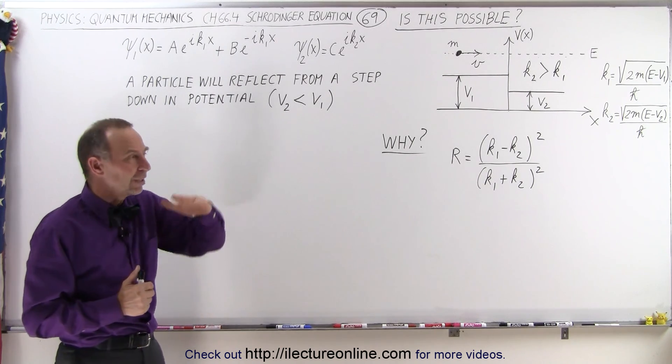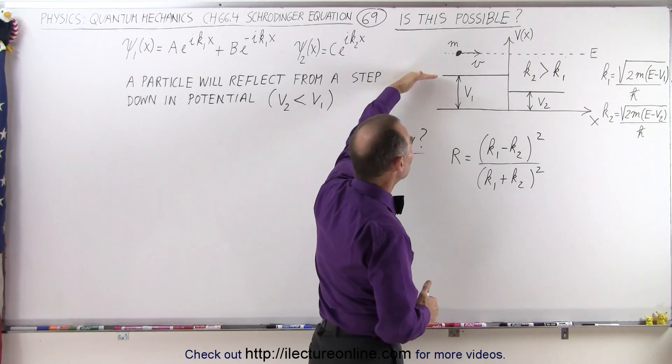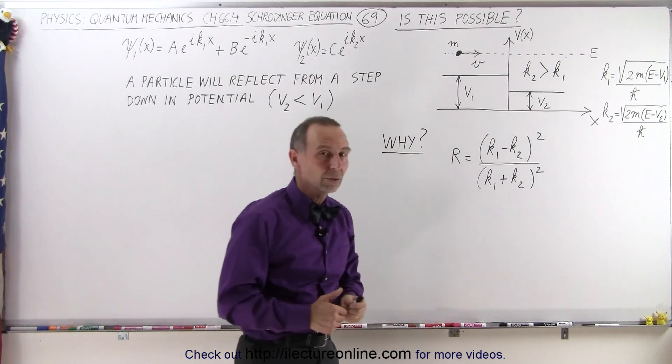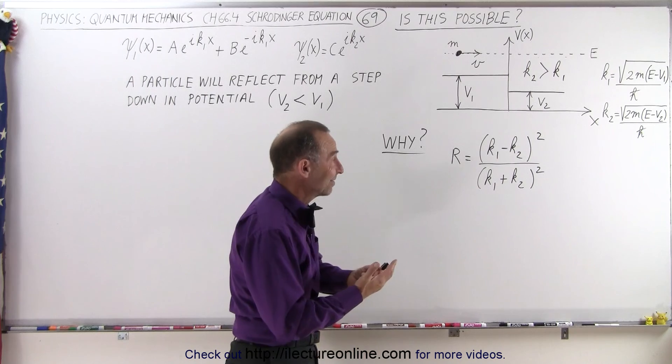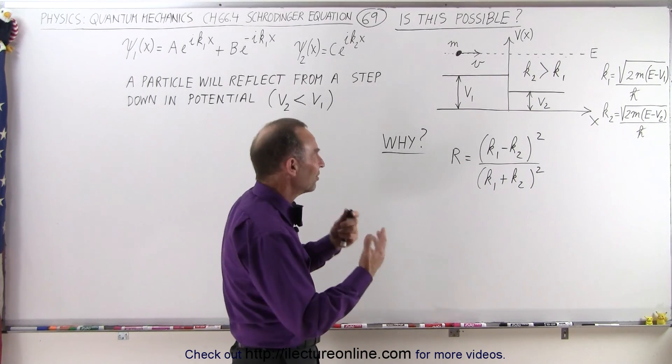But what if the barrier is actually a negative barrier? What if the potential on region 1 is larger than the potential in region 2? Will there then be any kind of reflection of particles? And the answer is yes, there will be a reflection. And now you're saying that's just not possible.